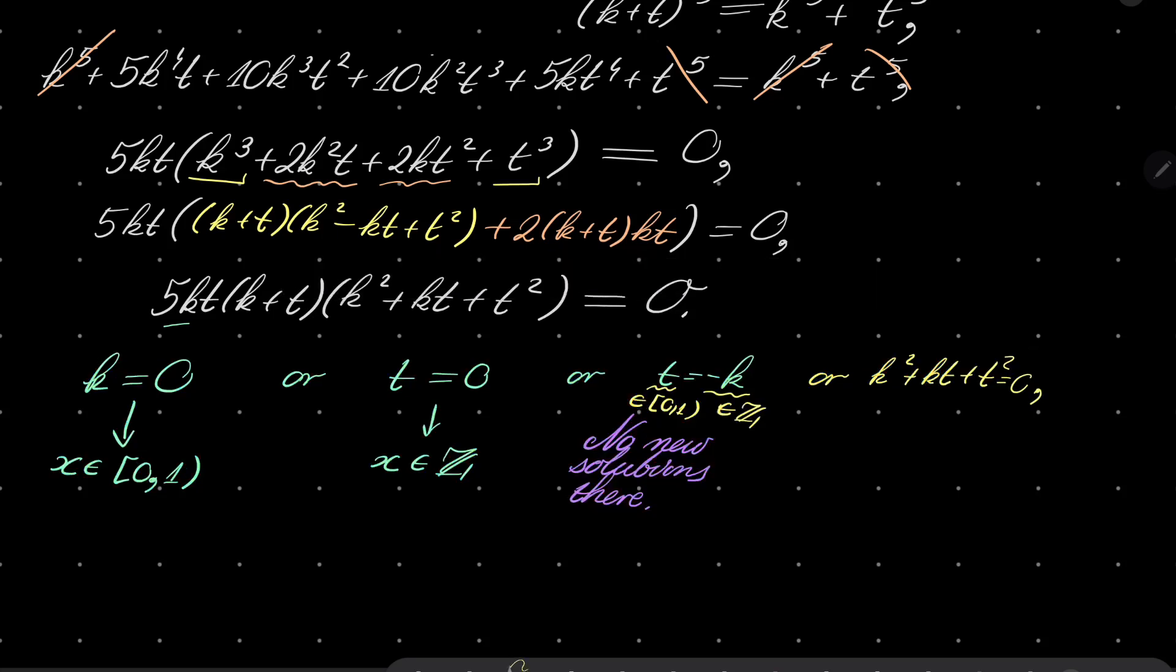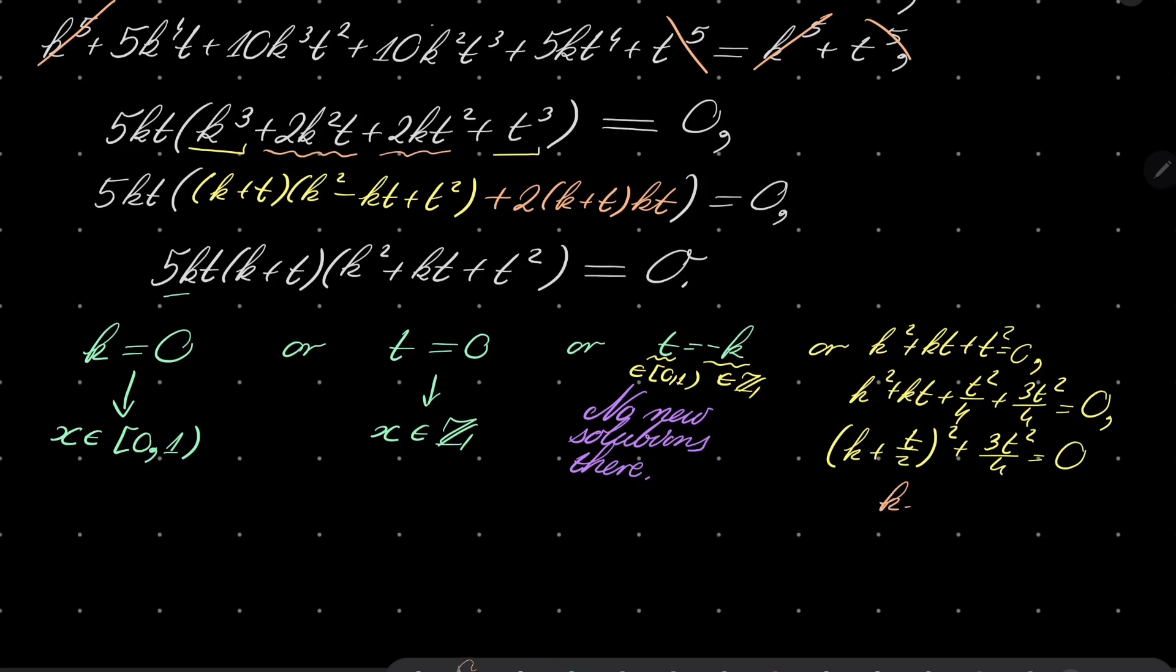Notice that the last part, we can multiply or not. Let's do the following. Notice that basically the only solution of this is 0, 0. I will justify it in this straightforward way. I will write t squared as t squared over 4 plus 3t squared over 4. And now we have k plus t over 2 squared plus 3t squared over 4 equals 0. You see, the only possibility is that both k and t are 0 for this to be true. But this was already covered.